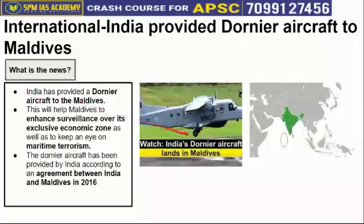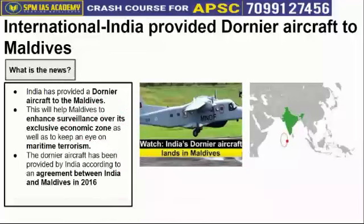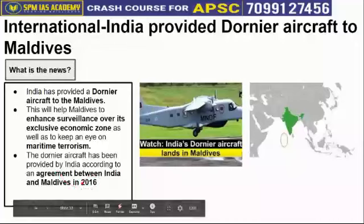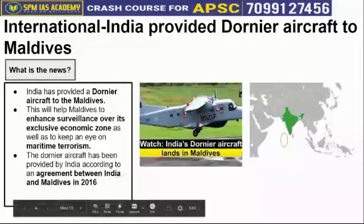The Government of India has gifted a special military aircraft called the Dornier aircraft to the Maldives government. This Dornier aircraft will help the Maldives government and army to conduct better surveillance of the nearby coastal area in order to avoid any kind of maritime terrorism. An agreement related to this Dornier aircraft was signed between India and Maldives in 2016, in which India promised to give the Dornier aircraft. Now, fulfilling that 2016 commitment, India has gifted the Dornier aircraft to Maldives.